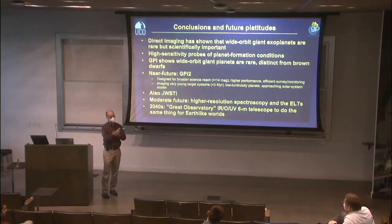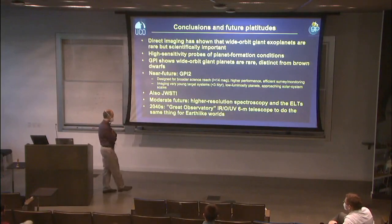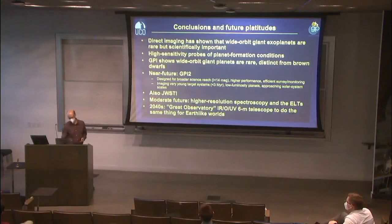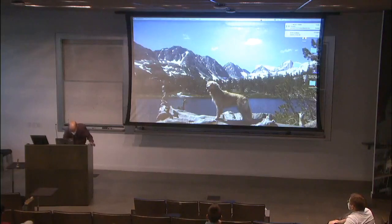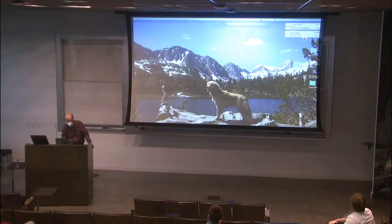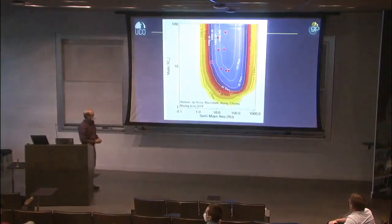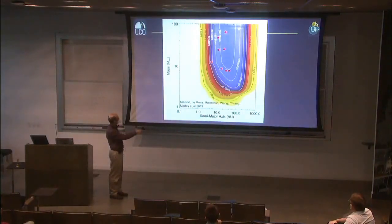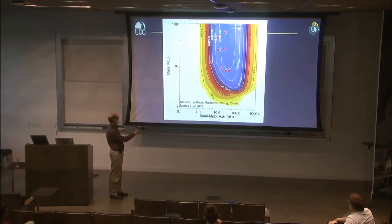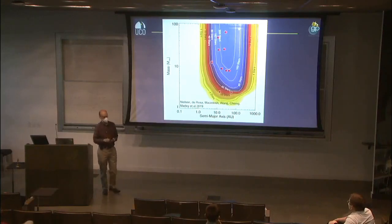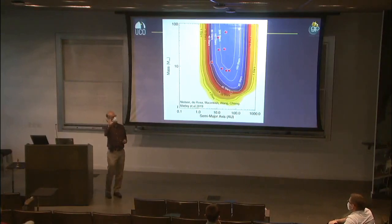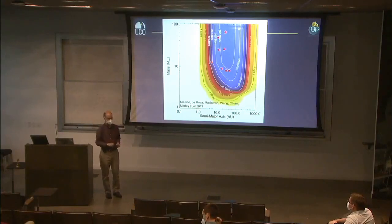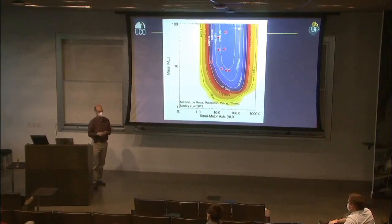Q: What are the current observational limits on additional planets in the 51 Eri system and how much better could GPI-2 do? The survey completeness shows that 51 Eri is roughly at the four-star sensitivity line. We could see a Jupiter-and-a-half mass object at wide separations, and a 51 Eri b analog down to about 3 AU — though that's probably dynamically excluded anyway. At wide separations, actually that makes a great JWST project: looking for a half-Jupiter-mass object at 100–200 AU.